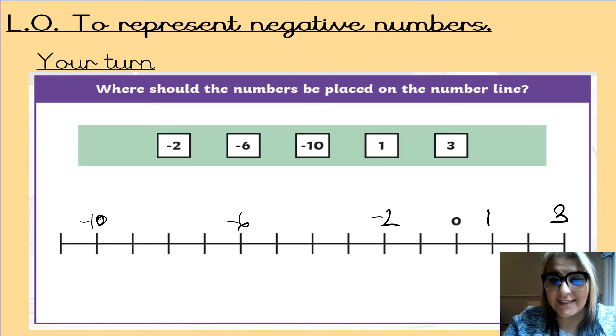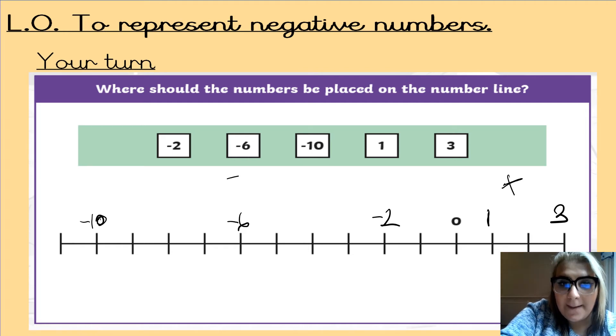So, as you can see here, I've added the numbers onto the number line. You've got zero, one, space, and three, your positive numbers, and then after zero, you've got a space, minus two, a couple of spaces, and minus six, and then a couple more spaces, and minus ten. So, that's how your numbers go.